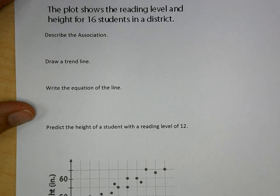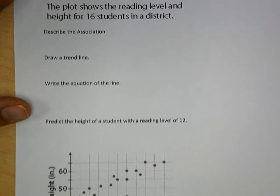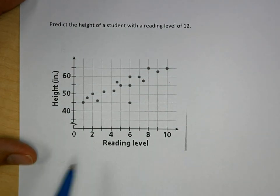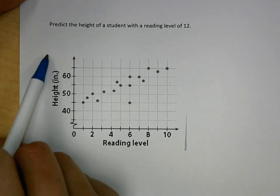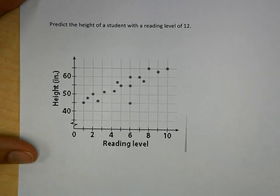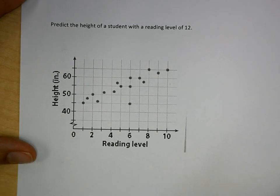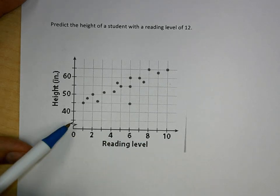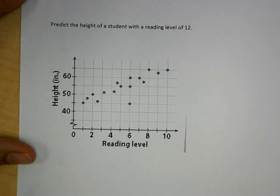First thing we're supposed to do is describe the association. When we describe an association, we talk about the x-axis, we talk about the y-axis, and then we talk about the direction they're moving, and try to decide if it's a positive or a negative association or if there's no association. For this particular example, reading level is increasing and height is increasing — this is a positive association.